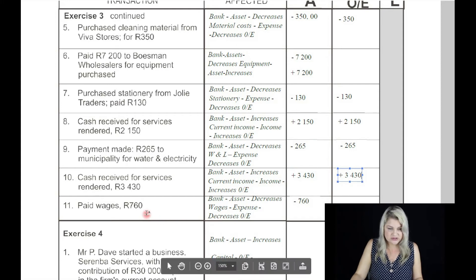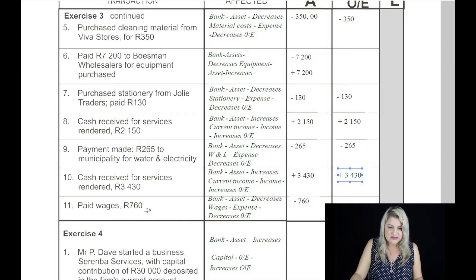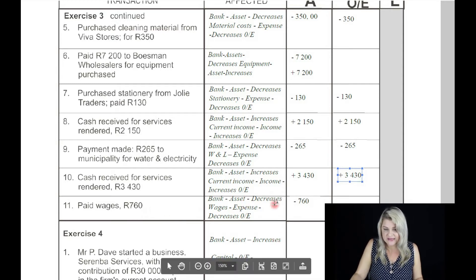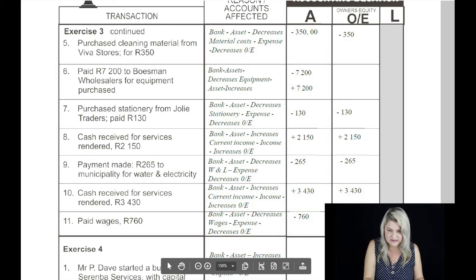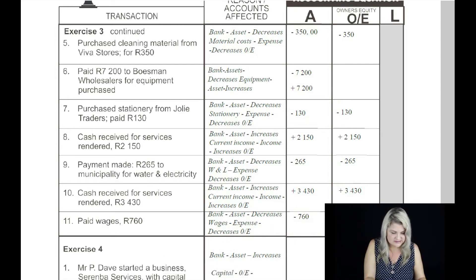The eleventh transaction: paid wages, 760 Rand. Paid wages from the bank. The bank is an asset and it decreases. Wages is an expense — an expense decreases owner's equity. So it'll be minus 760 Rand on owner's equity.